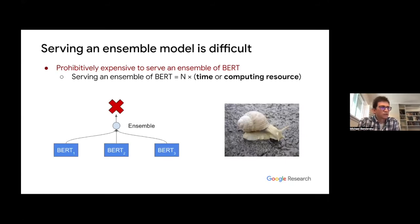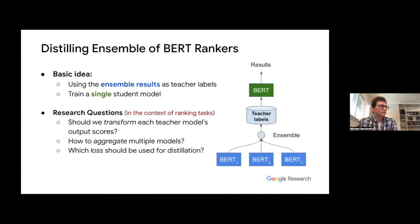However, ensembles are really expensive to serve — serving N BERT models requires N times the running time and compute. The basic idea is distillation: use the ensemble results as teacher labels and train a single student model that predicts better than any individual model in the teacher ensemble. Key research questions: how do we transform each teacher model's output scores, how do we aggregate across multiple models, and which losses should we use?